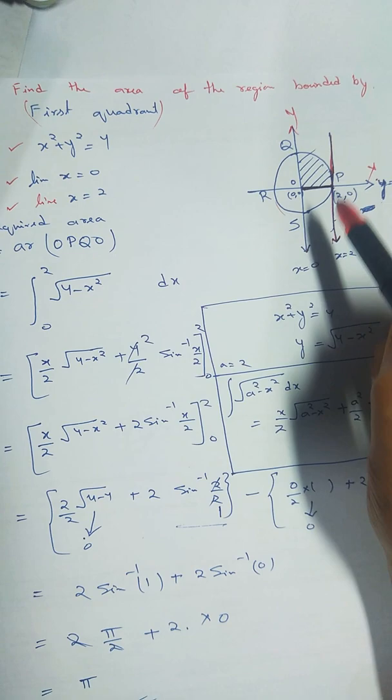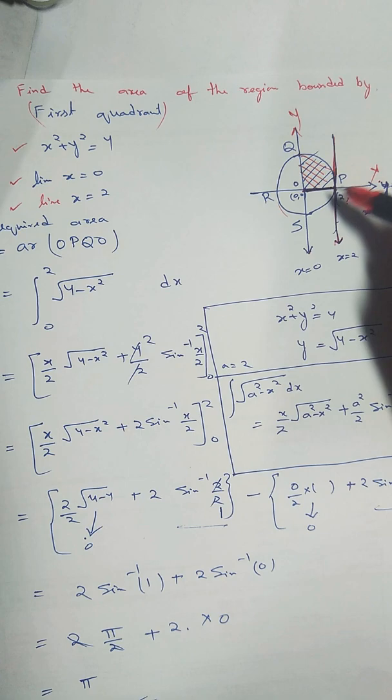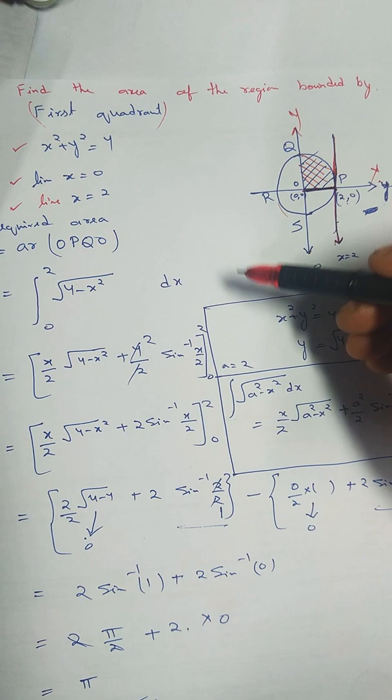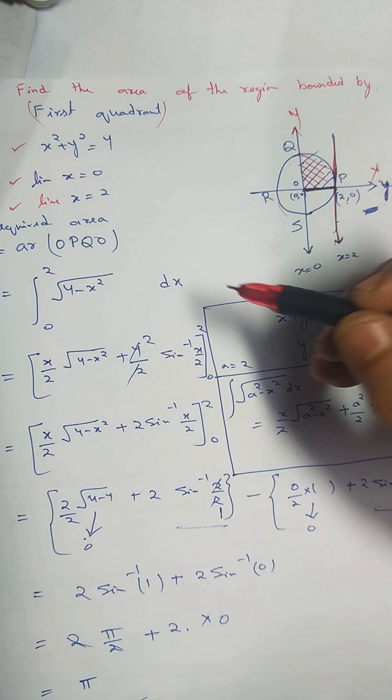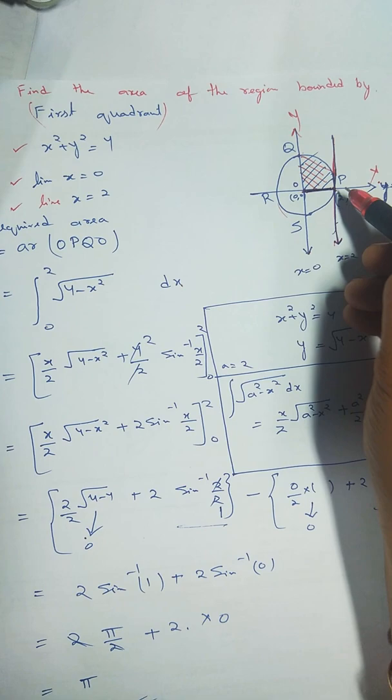And it is written first quadrant, so we have to find only this much area. Let's start. Find the required area of OPQO. The limits are x = 0 and x = 2, and we are integrating with respect to x, so we have to apply that formula: upper side graph minus lower side graph.